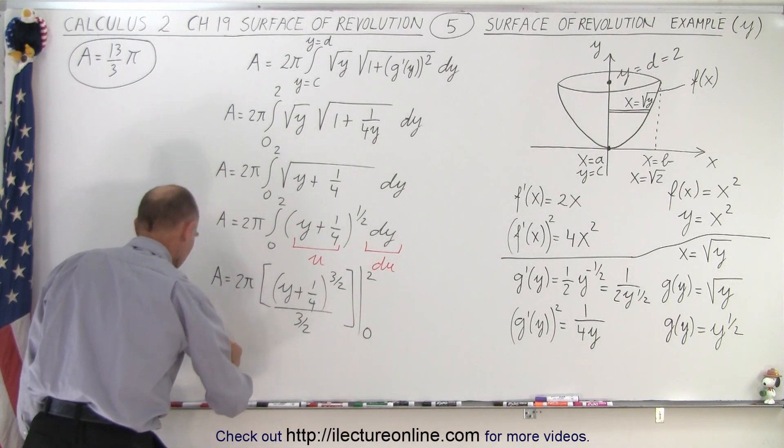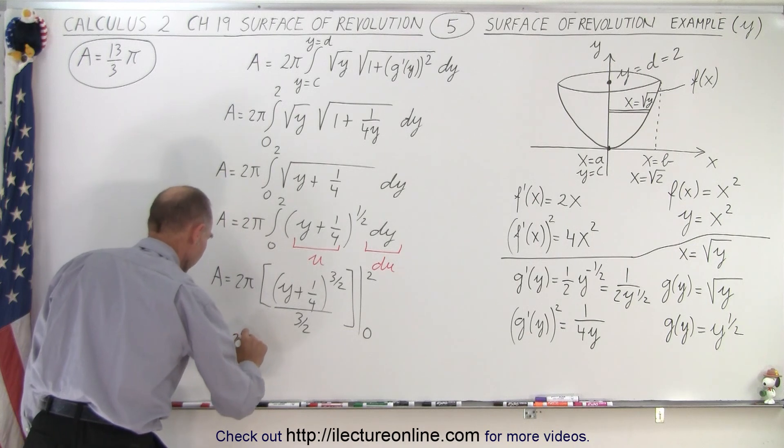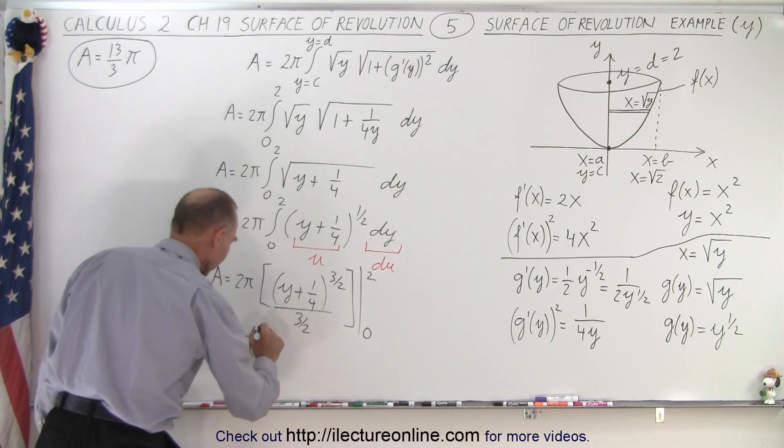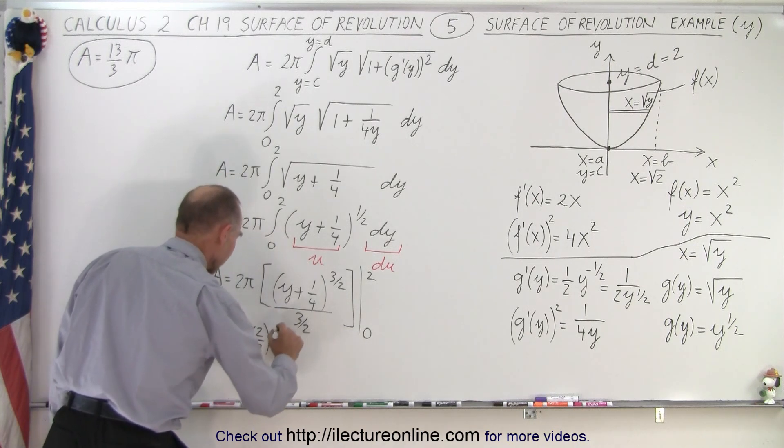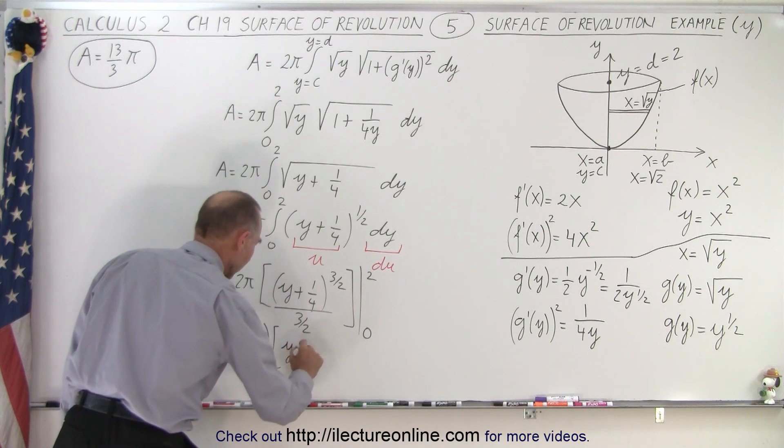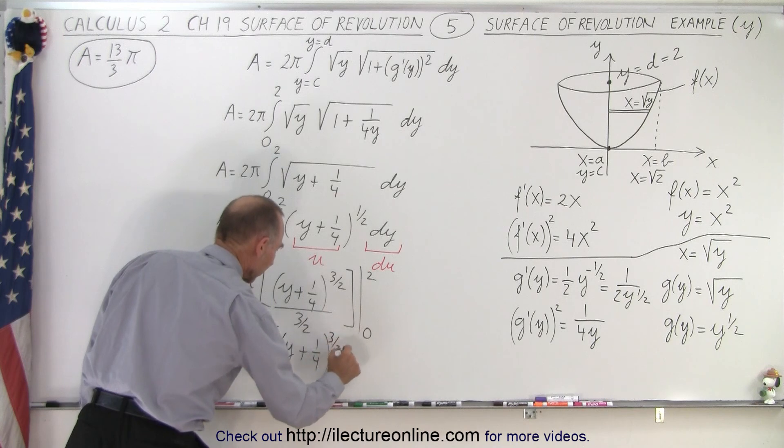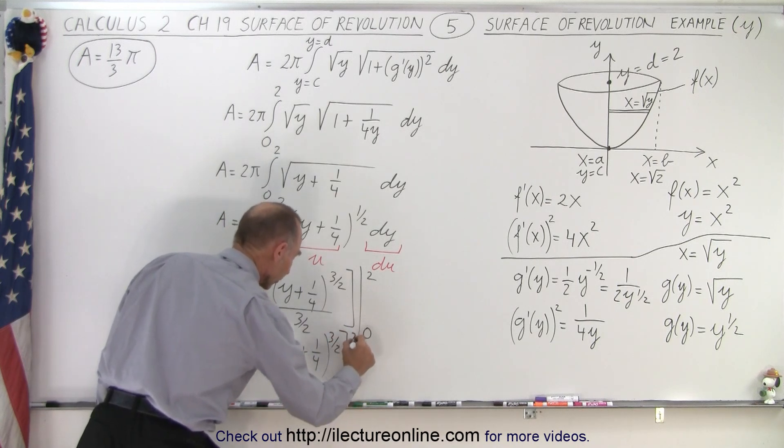Okay, so we end up with A equals 2 pi times the inverse of this, which is 2 over 3, times the quantity y plus 1 quarter to the 3 halves power evaluated from 0 to 2.